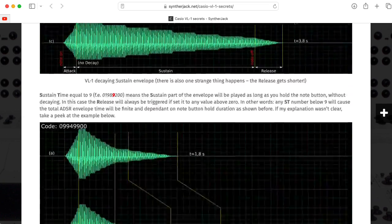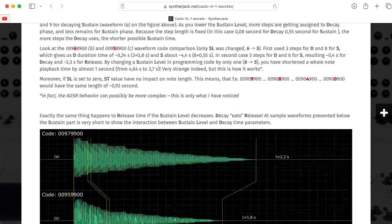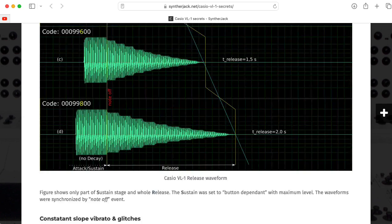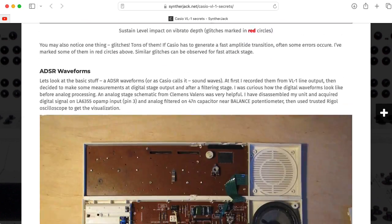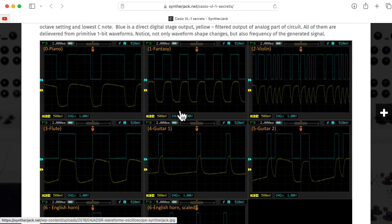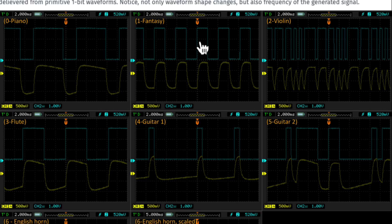Basically the Casio VL1 produces a waveform that consists of just a bit stream, a bunch of ones and zeros, in various patterns. There's six basic patterns, and then there's three others that also have some frequency modulation for special effects.